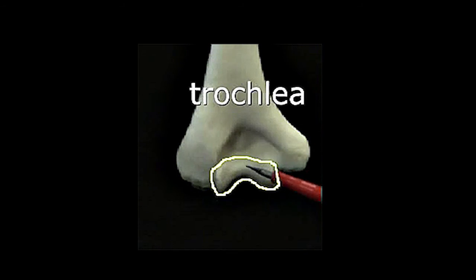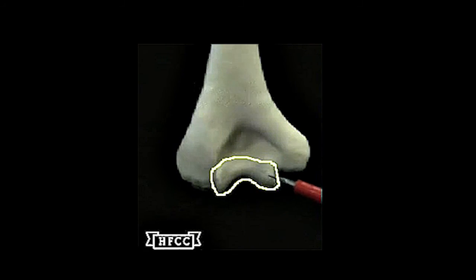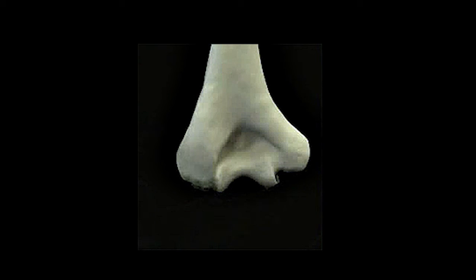This is the trochlea again, the pulley shape that's continuous with the anterior. The posterior view here has no capitellum. That's seen only on the anterior. A key identifying point.